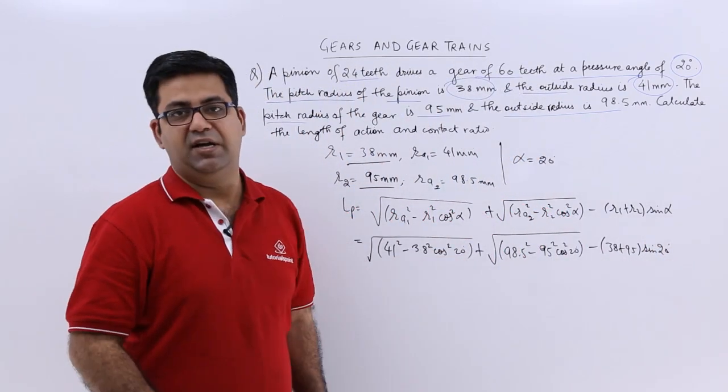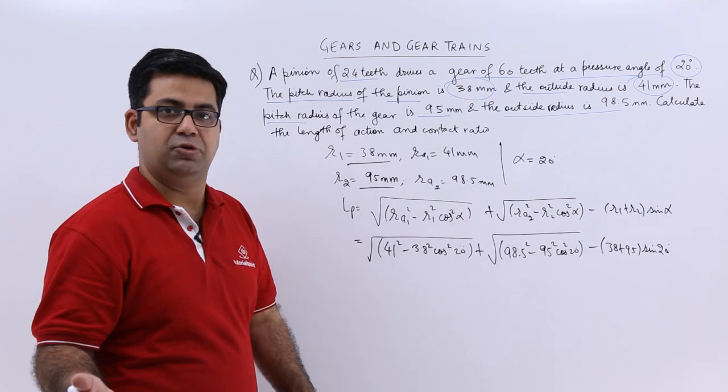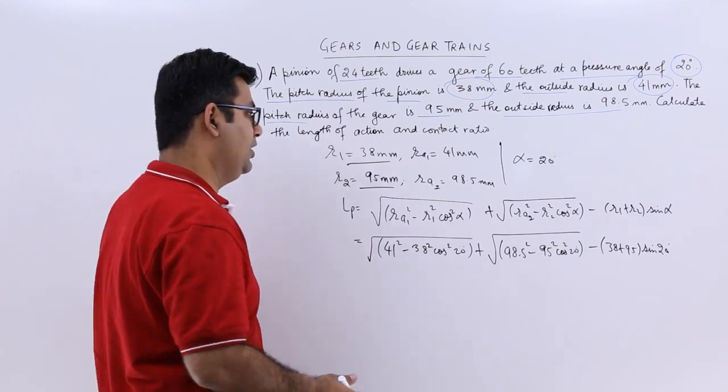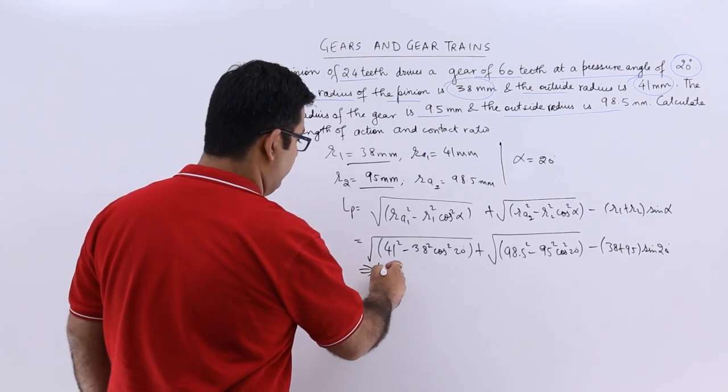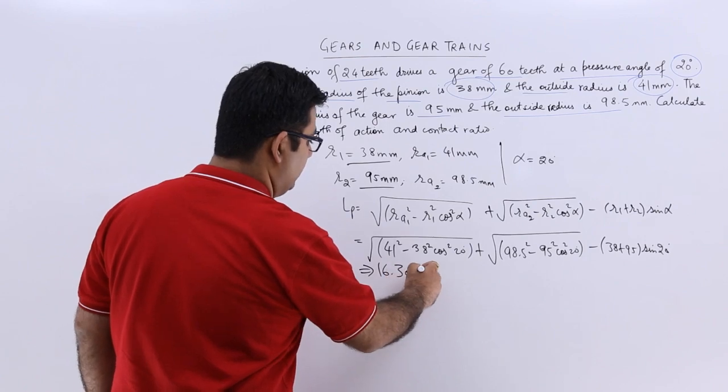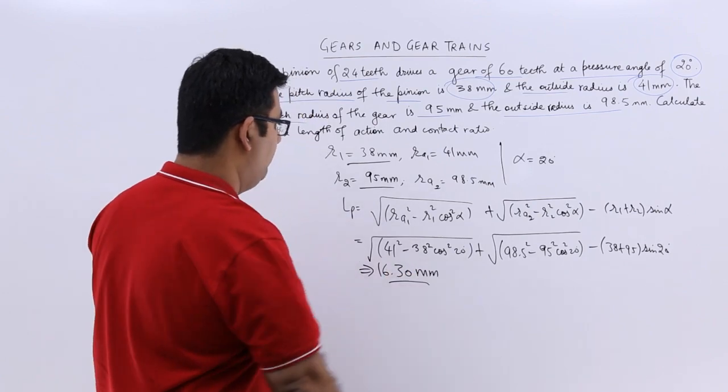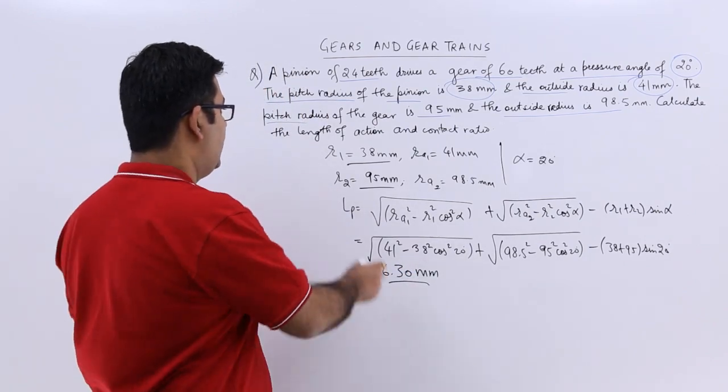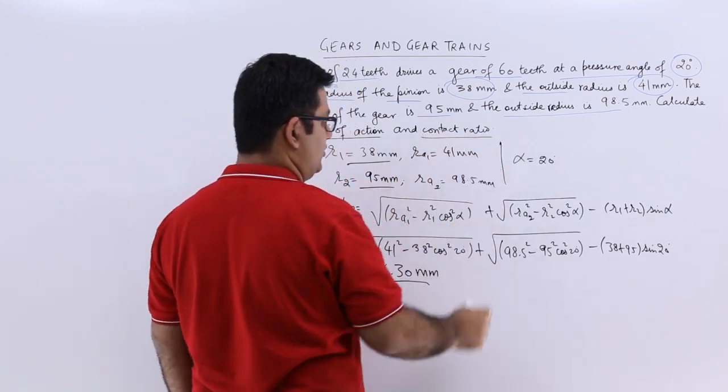Now this is an equation to be solved with the help of scientific calculators which will give you a value of 16.30 millimeters. So this takes care of the first part.